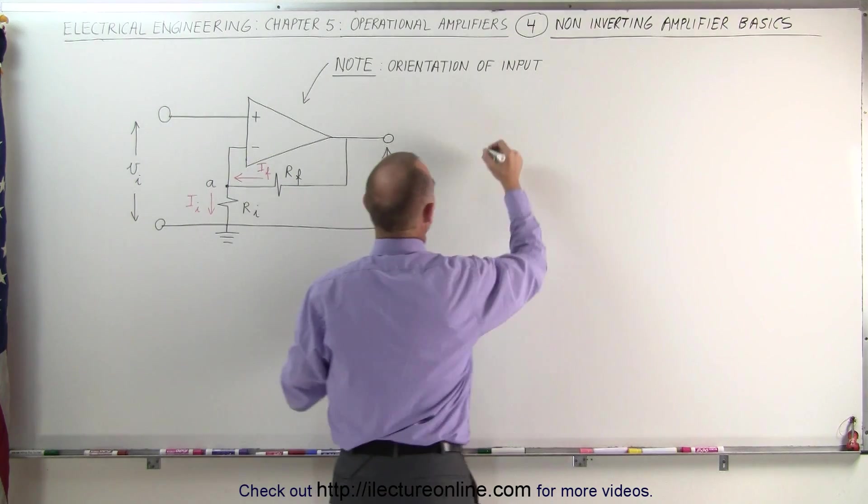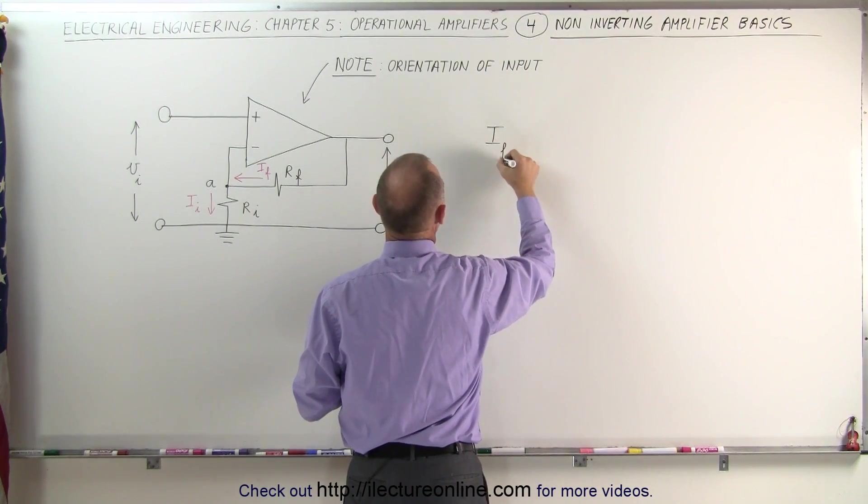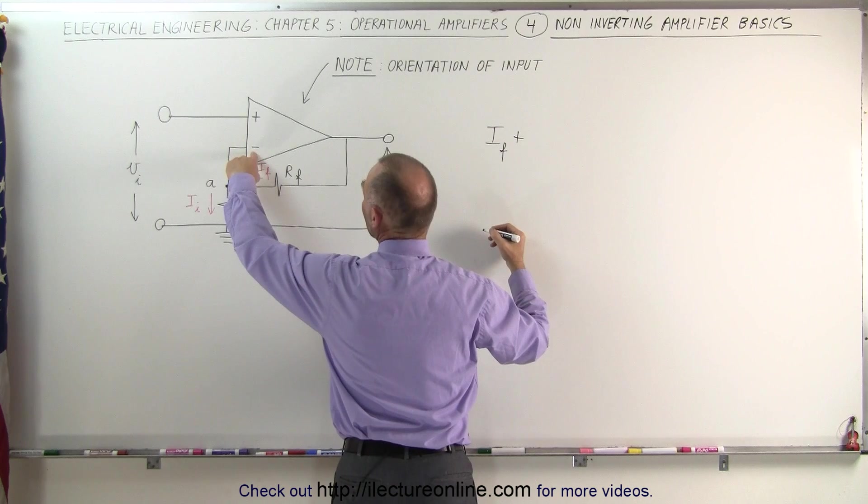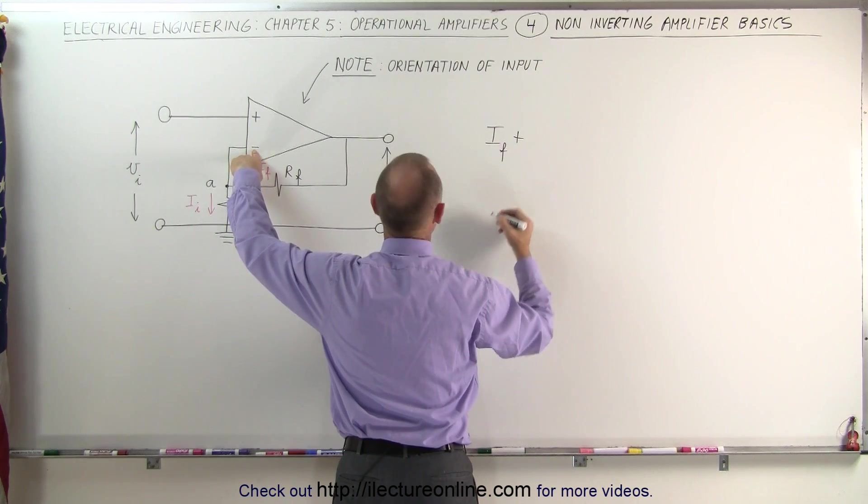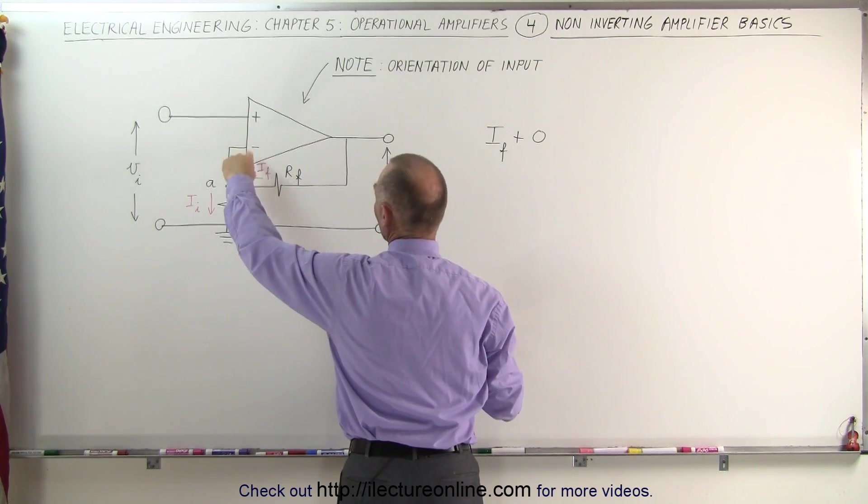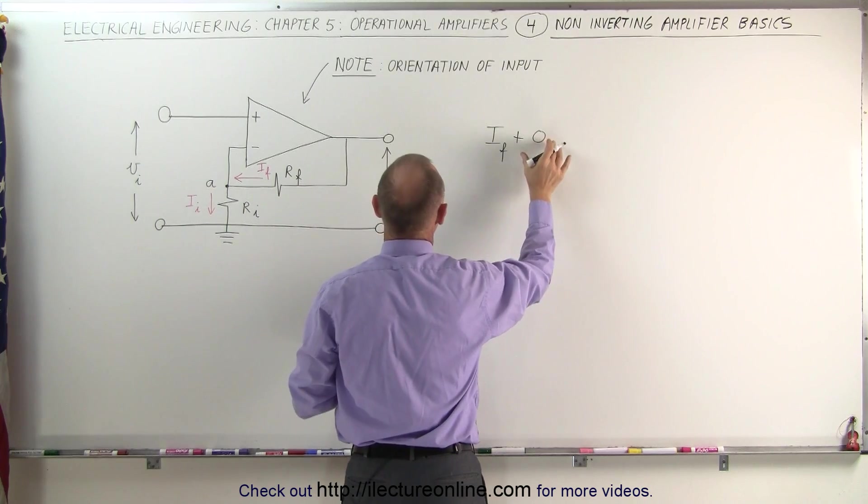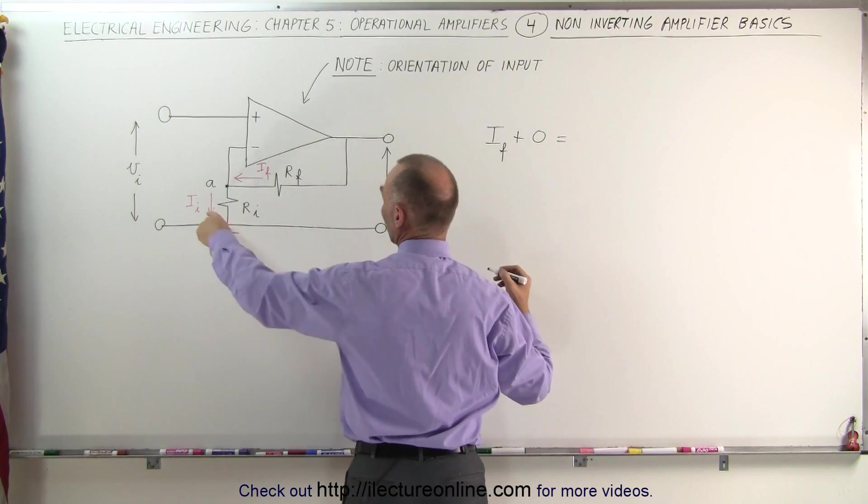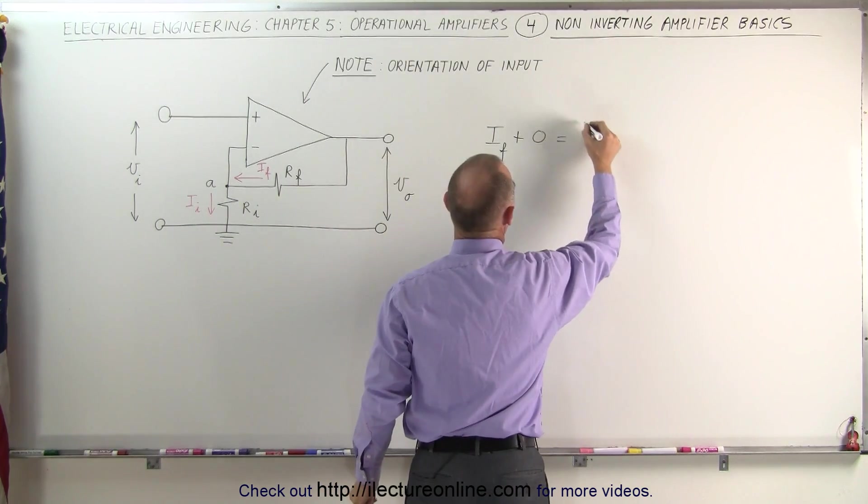So we have the feedback current entering the junction and we have the current coming from the inverting terminal right here. But since we realize that that current is virtually zero we can just call it zero, and that equals all the currents leaving the terminal which is I sub I.